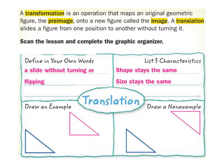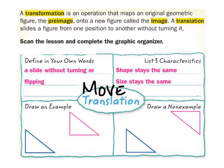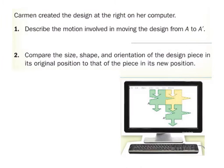A translation simply means we move an object — we take the exact same shape and move it. Nothing else changes other than its position. In this textbook example, it starts with a triangle and moves it over. Notice the second triangle looks rotated or flipped, which means it wasn't just translated — it wasn't just moved.